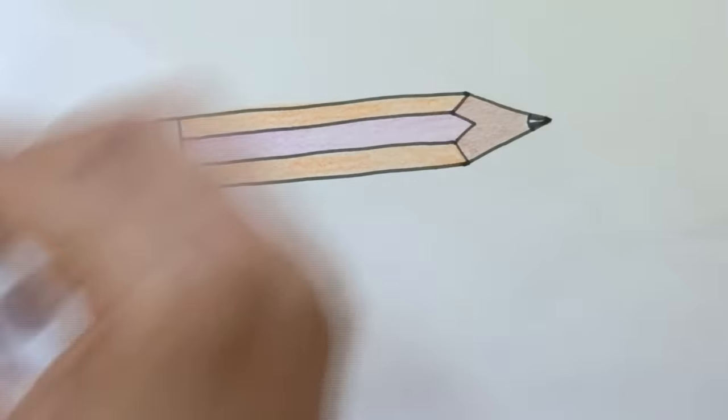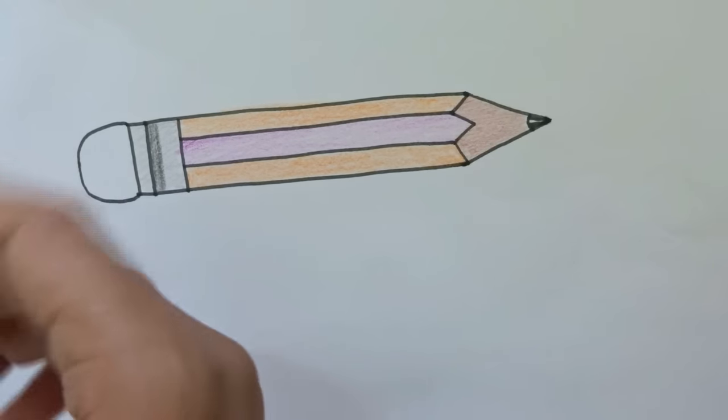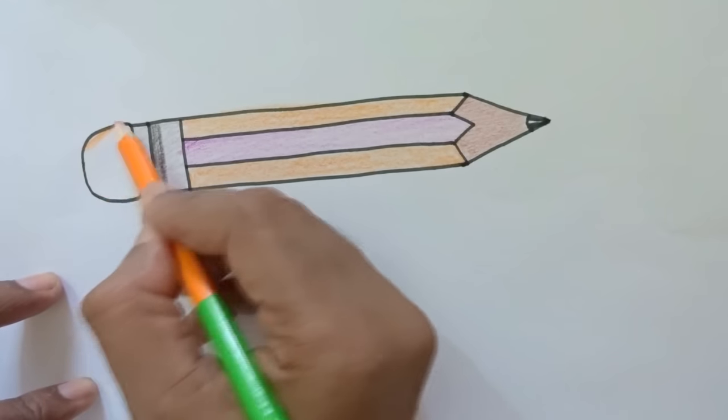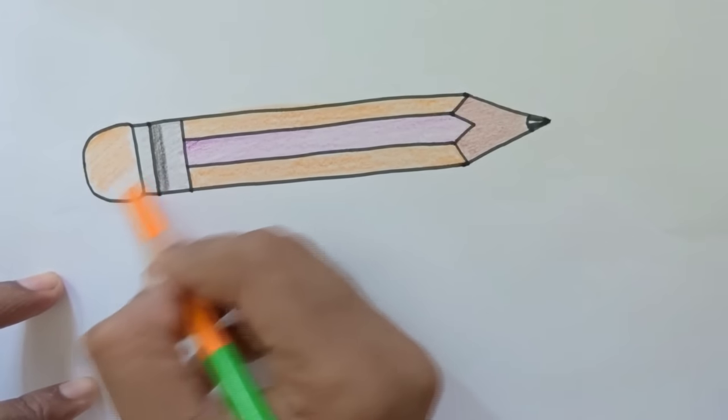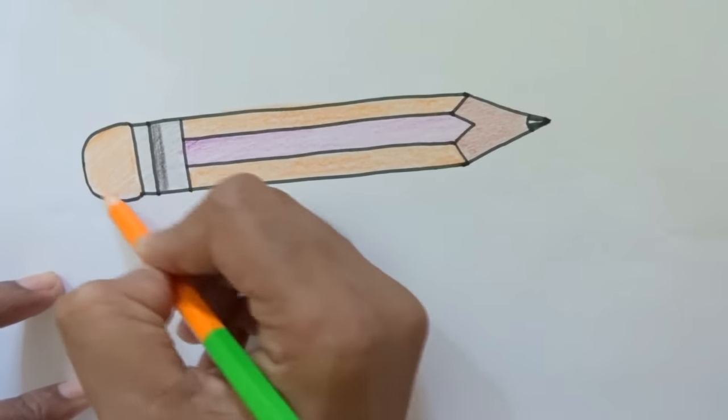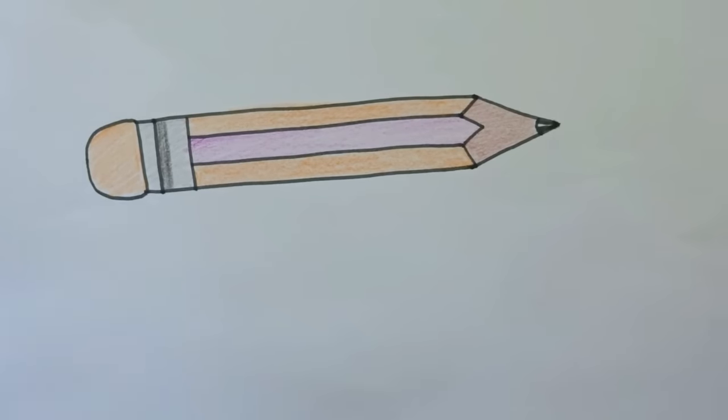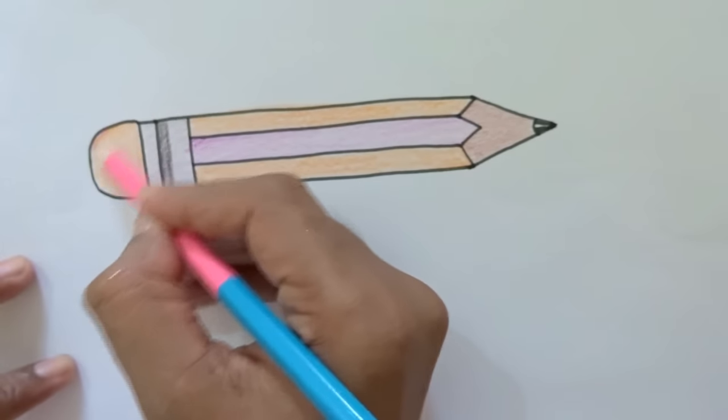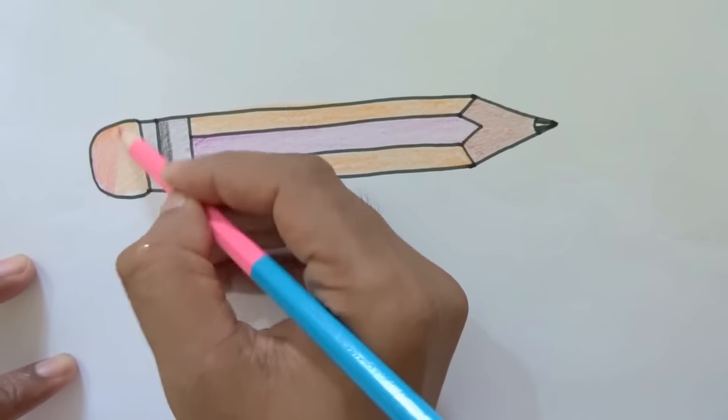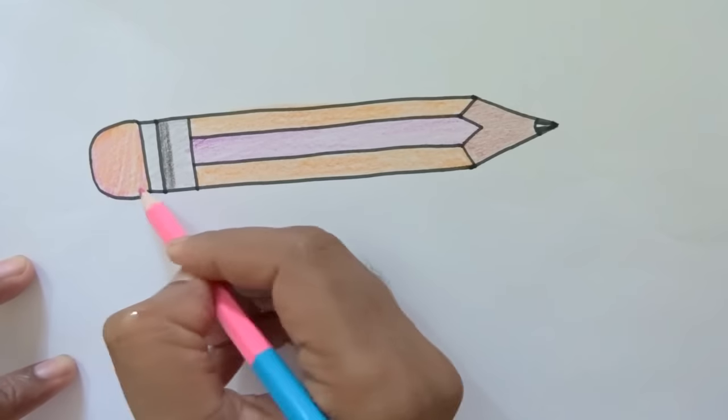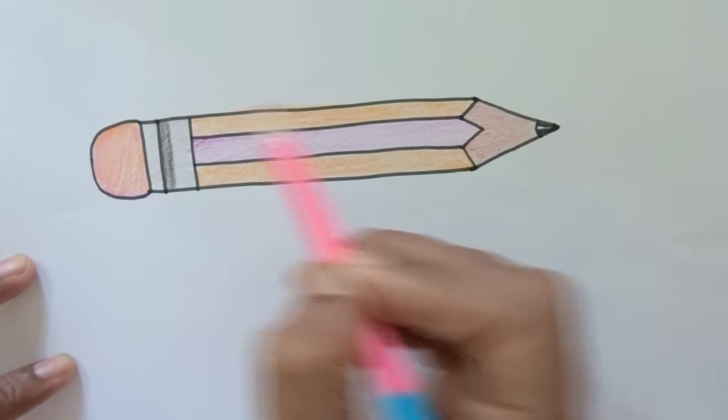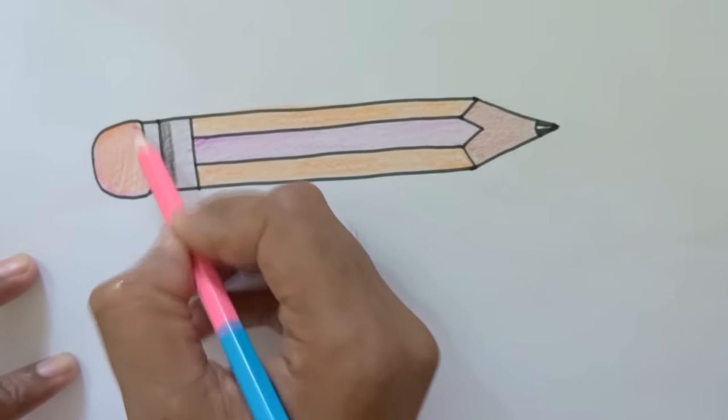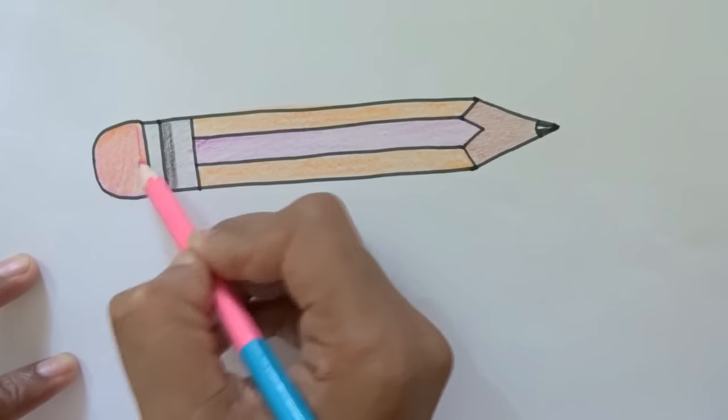Now the eraser we need to color. So what color we will fill it? Orange. We'll mix two colors. One in orange, another we'll take pink. See, I'm quite happy with this color. You can choose some other color also.